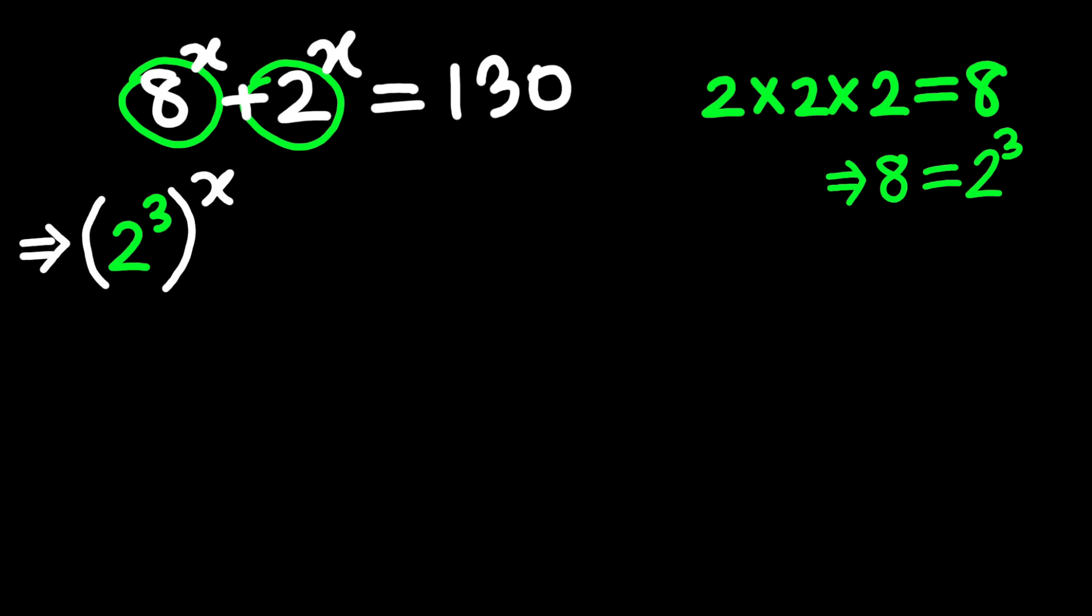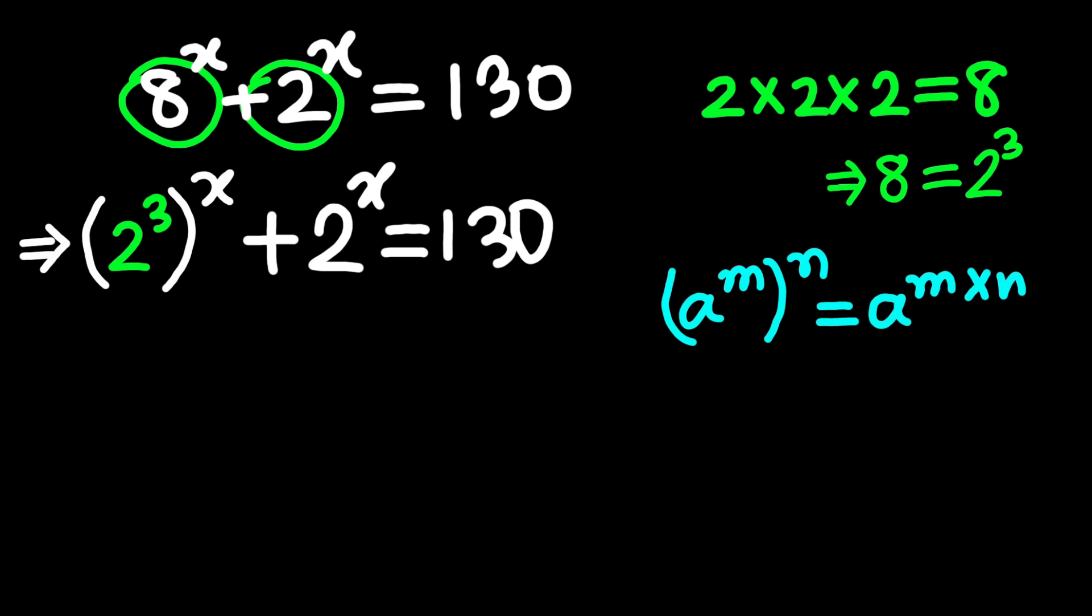Now we have 2 cubed, all raised to the power x, plus 2 to the power x equals 130. Now here's where we use that handy exponent rule. a to the power m, all raised to the power n, is the same as a to the power m times n. So 2 cubed to the power x becomes 2 to the power 3x. That makes our equation 2 to the power 3x plus 2 to the power x equals 130.